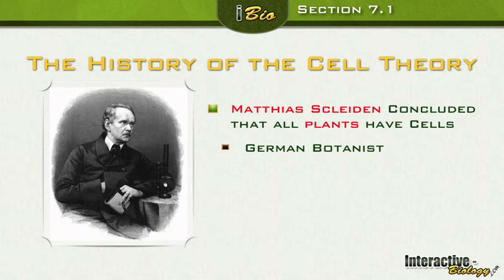Let's go back to the beginning. Who invented the microscope? Anton van Leeuwenhoek. The first person to see a cell? Robert Hooke. And the one that concluded that all plants have cells? Matthias Schleiden.